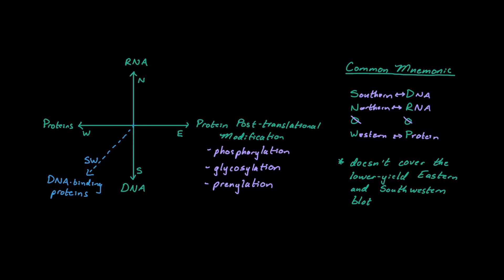I like this mnemonic because it covers probably the most commonly tested blots that we look at on the MCAT, which are Southern, Northern, and Western. However, these don't cover the lower yield Eastern and Southwestern blot, which might be good to be familiar with just to be exhaustive and make sure you know everything for test day. But I would really expect Southern, Northern, and Western to be tested more often.